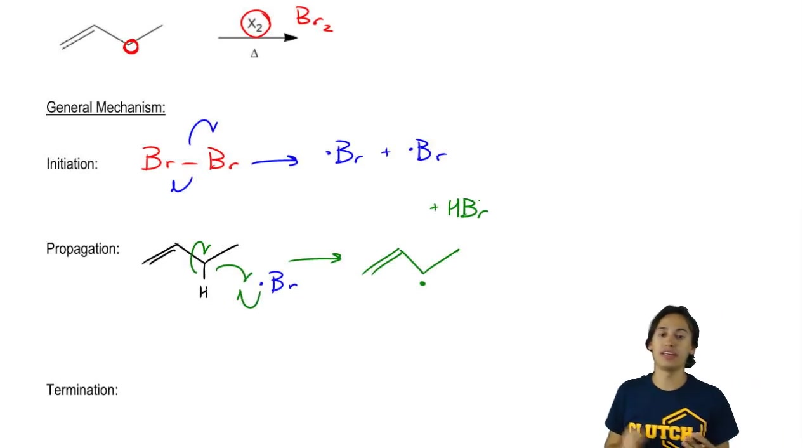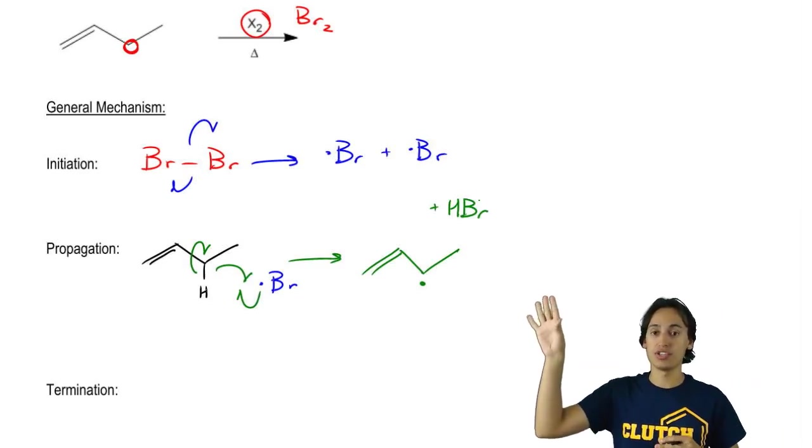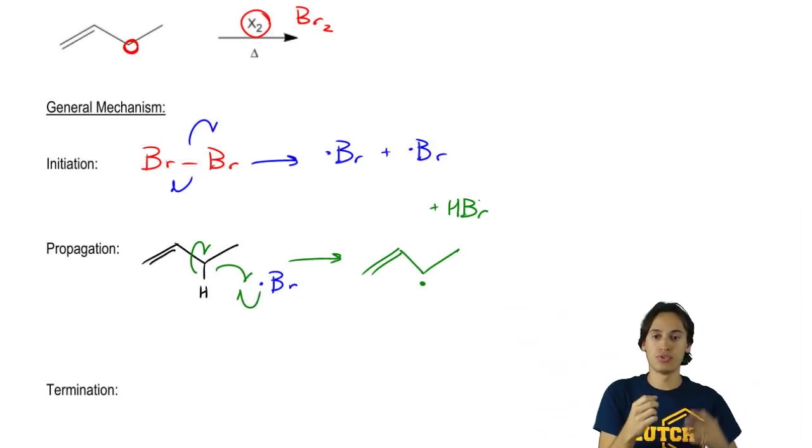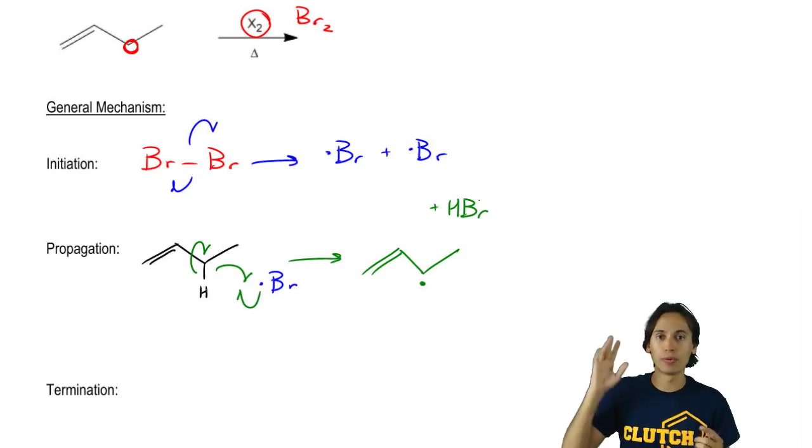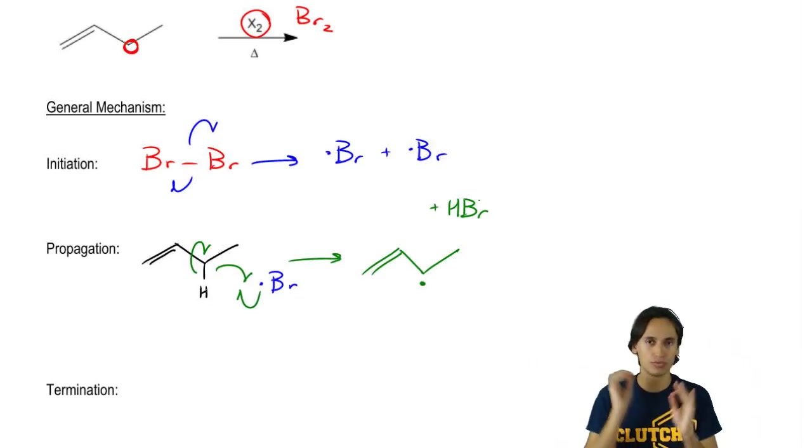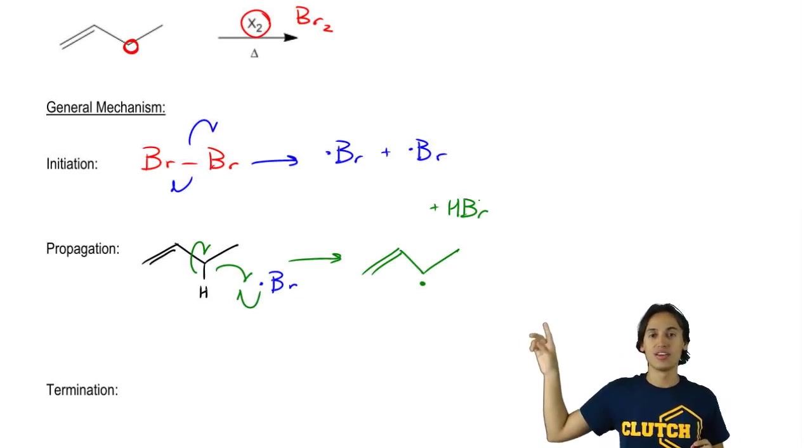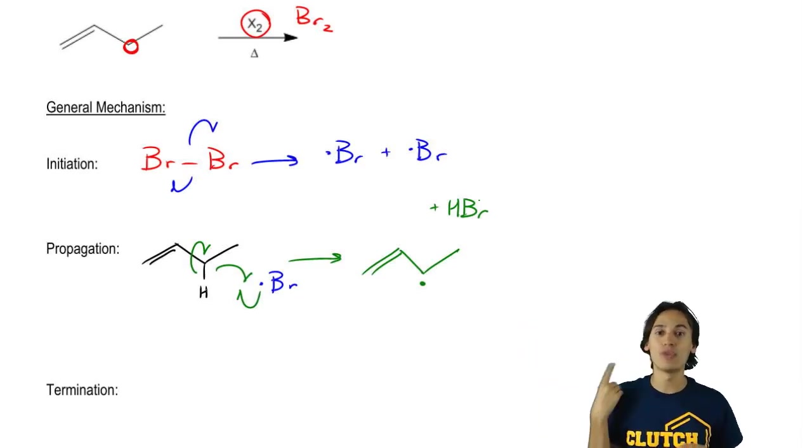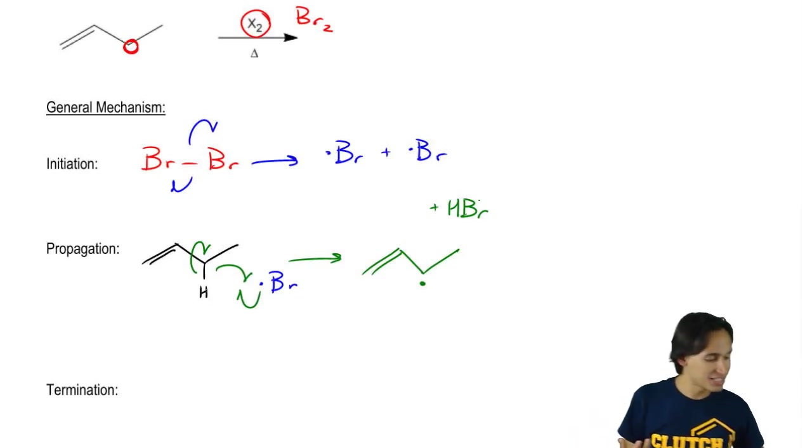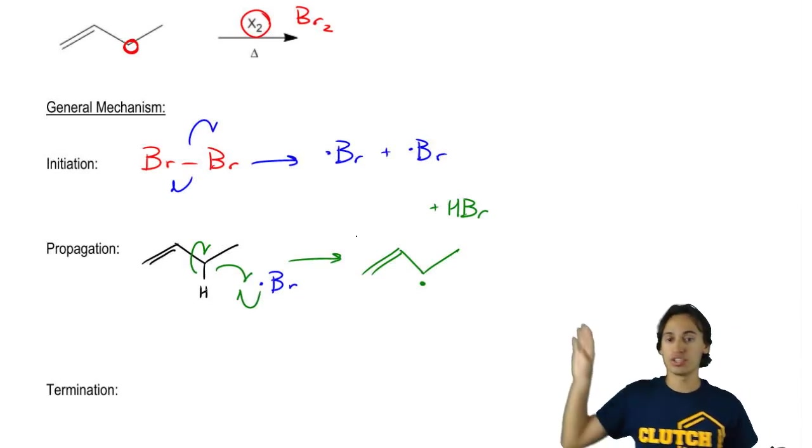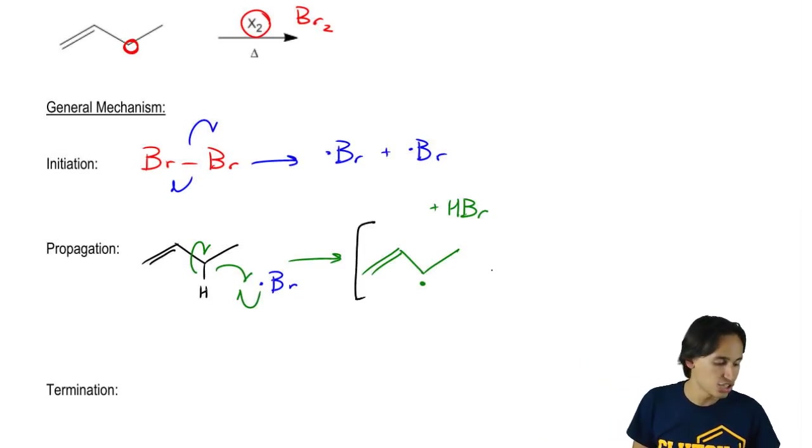Usually the propagation phase would continue and I would have to regenerate the Br radical by reacting with Br2. That's normal, that's what we're expecting. But wait, there's a little difference. This radical can now resonate. So that means I can't actually just continue from here. I need to draw the resonance structure of this radical before I can continue.